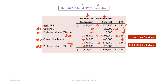Adding the third-ranked item — Class B preferred shares — contributes $30,000 in additional earnings and 20,000 additional shares (10,000 preferred shares convertible into two common shares each). The final total is $1,409,000 earnings divided by 858,950 shares. This also rounds to $1.64 at two decimal places; the marginal impact of adding $30,000 and 20,000 shares is negligible at this scale. That concludes the diluted EPS calculation.